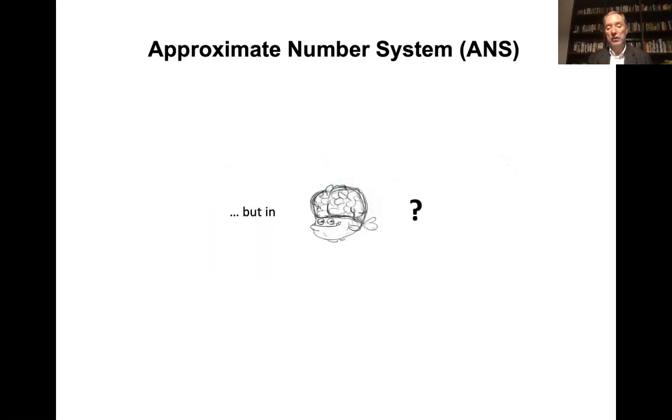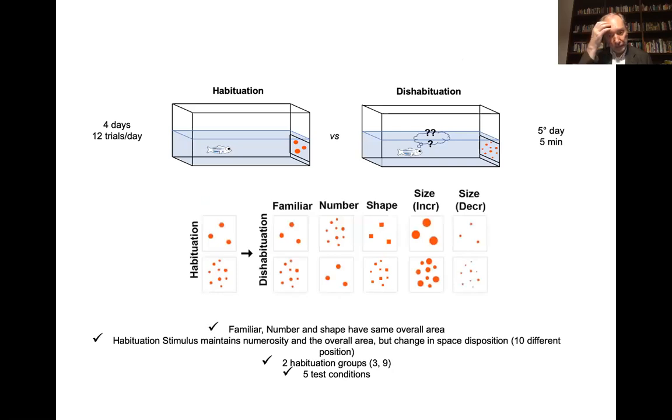But what about zebrafish and what about fish in general? To study the problem we developed a method of habituation-dishabituation, similar in a sense to the tasks which are typically used with infants. So fish were habituated in a series of trials in five days to the presentation of a particular numerosity, three, and the physical characteristics were changed according to the script I described before, change in density, change in overall area, et cetera.